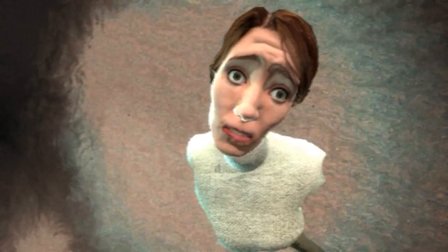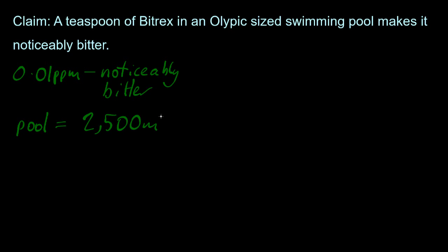Bittrex can be detected at 0.01 parts per million. Oh, I can't believe I spelt Olympic wrong. Okay, so 0.01 parts per million is noticeably detectable, according to their website. And the Olympic-sized swimming pool, 2,500 metres cubed on average. Now we love our decimetres cubed, so let's convert it, making it 2,500,000 decimetres cubed.